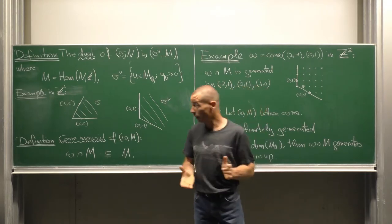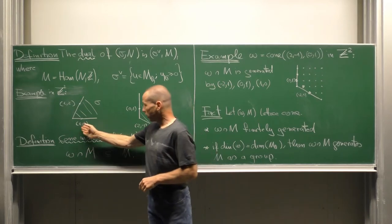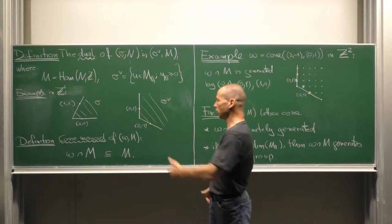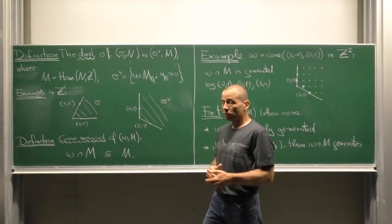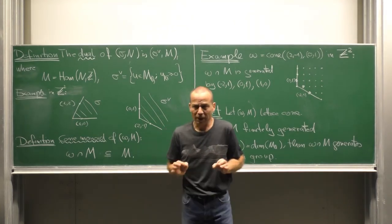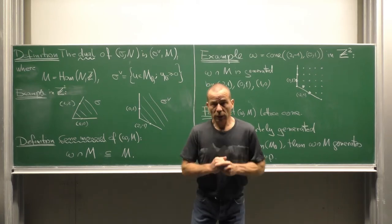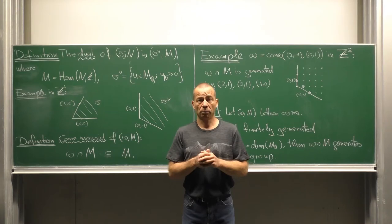Let us look at an example. The cone sigma generated by (1,0) and (1,2) in Z^2 is a lattice cone. Its dual cone is the following. We take the dual cone generated by (2,-1) and (0,1) which also lives in Z^2 and here we identify Z^2 with its own dual lattice via the standard bilinear form.